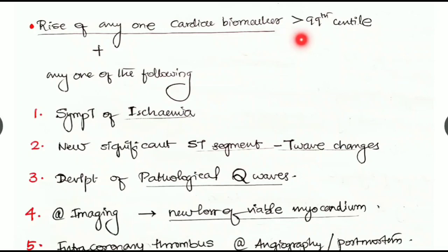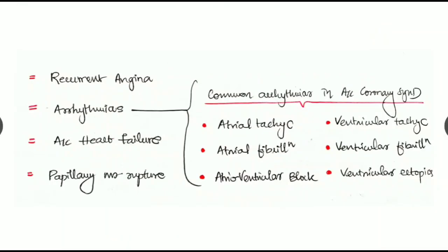It can manifest as recurrent angina, arrhythmias, acute heart failure, or papillary muscle rupture. Arrhythmias commonly seen are atrial tachycardia, atrial fibrillation, atrioventricular block, ventricular tachycardia, ventricular fibrillation, and ventricular ectopics.